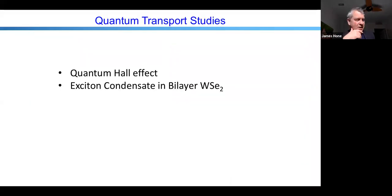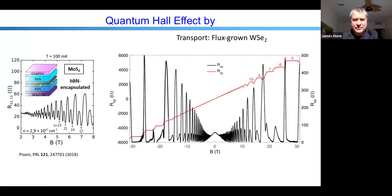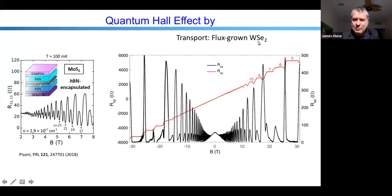Let me move on to our studies of transport and optical properties in these materials. Now that we grow these nicer crystals, can we see improvements in transport properties? Studies of CVT-grown crystals showed quantum oscillations but did not show a fully developed quantum Hall effect. Relatively recently — we're still writing this paper up — we've shown fully developed quantum Hall effect, in bilayer tungsten selenide.